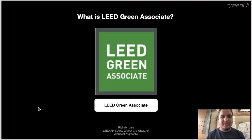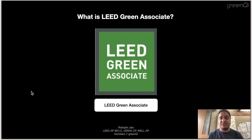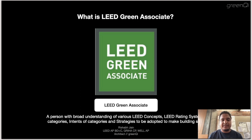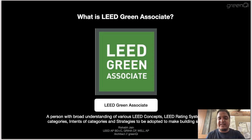The maximum points in the rating system are allocated to criteria that help reverse contribution to climate change, while the minimum points go to enhancing community and social equality — that's how the LEED framework is designed. The first step to designing or managing such projects would be becoming a LEED Green Associate. A LEED Green Associate is a credential given to a person with broad understanding of LEED concepts, rating system impact categories, intents, and strategies to make buildings sustainable.